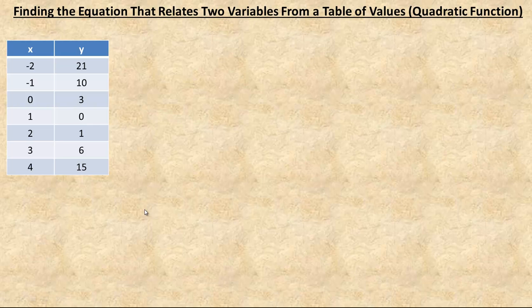In this tutorial we're going to take a look at how you find an equation that relates two variables that happen to be from a quadratic function. You wouldn't know that until you actually went through the table of values and found that the second differences are the same.